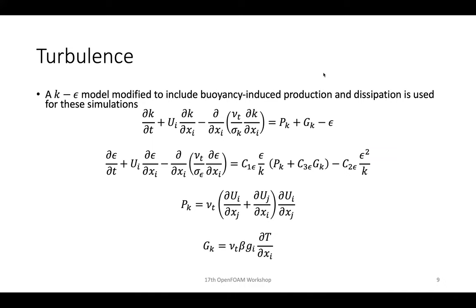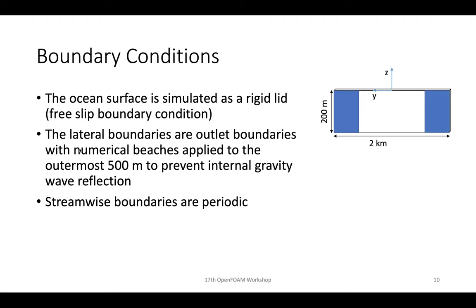The turbulence model is a standard k-epsilon model modified with a buoyancy production term Gk. In stable environments, this term is negative and suppresses turbulence; in statically unstable environments, it amplifies turbulence. The ocean surface is modeled as a rigid lid with a free-slip boundary condition. Lateral boundaries are outlet boundaries with numerical beaches at the outermost edges to prevent internal gravity waves from reflecting back and interfering with the ship wake. Streamwise boundaries are periodic.